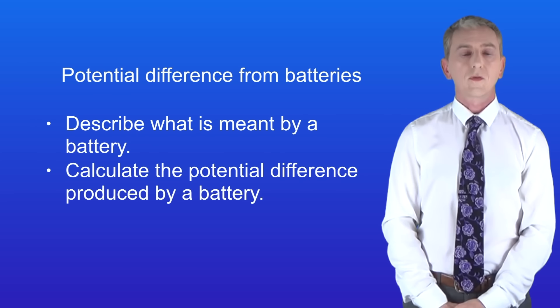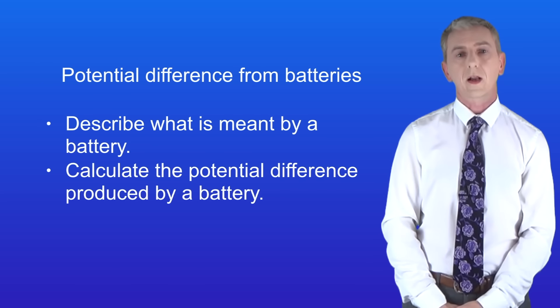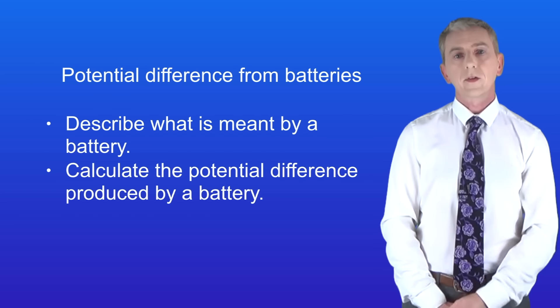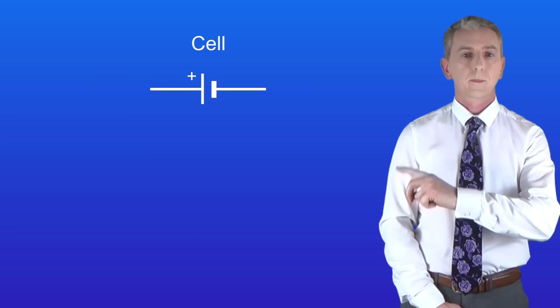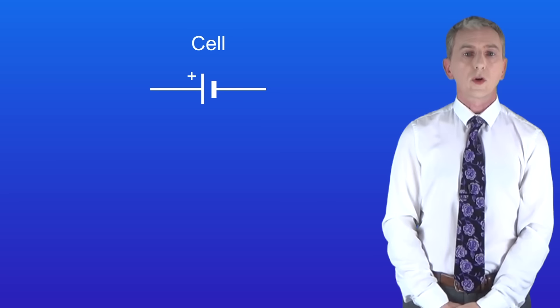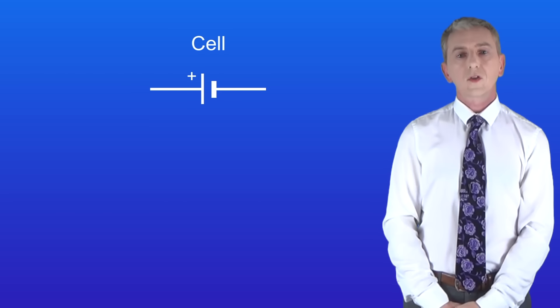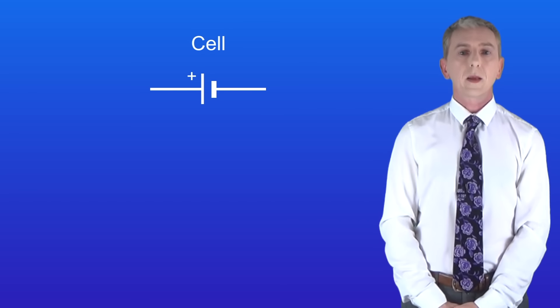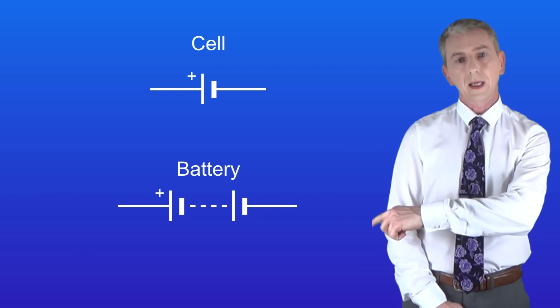All of the circuits we've seen so far have contained a cell, and here's the symbol for a cell. In physics we often use the word battery, so let's take a look at what that means. A battery is simply two or more cells connected together, and here's the symbol for a battery.